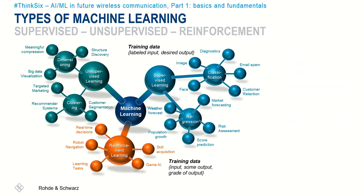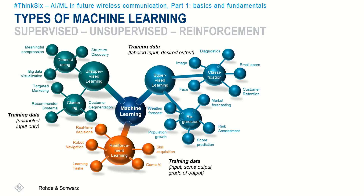The next type is reinforcement learning, which uses input, some output, and the grade of the output as training data. A prominent example is the AI in a computer or video game, where it reacts to the user's actions — in other words, the algorithm learns to respond to a particular environment. Last but not least, unsupervised learning is ultimately totally data-driven, as it only uses unlabeled input as training data. This method is typically used to preprocess data, explore patterns, and predict the output, such as in customer segmentation or targeted marketing.